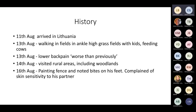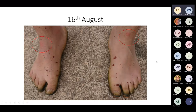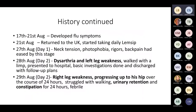On the 14th he visited rural areas including woodlands. On the 16th, while painting a fence, he noted a bite on his foot. From the 17th to 21st of August he developed flu-like symptoms. He flew back to the UK on the 21st and started taking Lemsip daily, suggesting he may have had fevers. On the 27th he started developing neurological symptoms — neck tension, photophobia, rigors, and back pain. On the 28th, he had dysarthria and left leg weakness; he could walk but with a limp. He went to hospital, had basic investigations including a scan to exclude cauda equina, which was normal, and was discharged for outpatient follow-up.